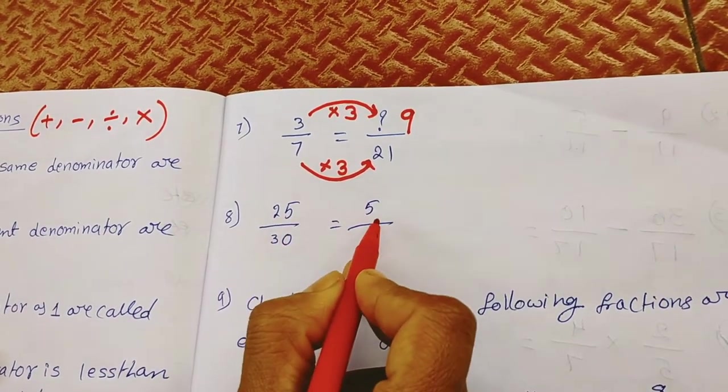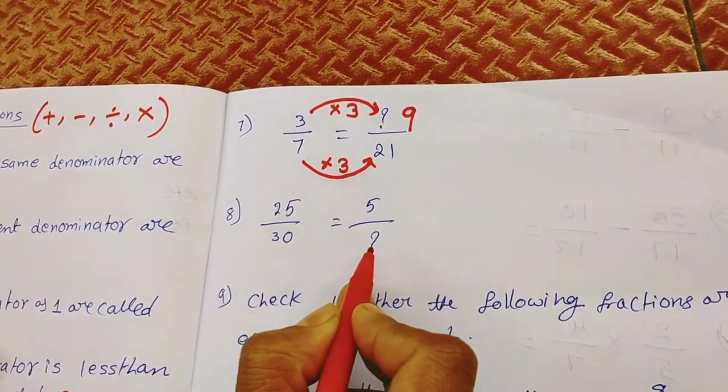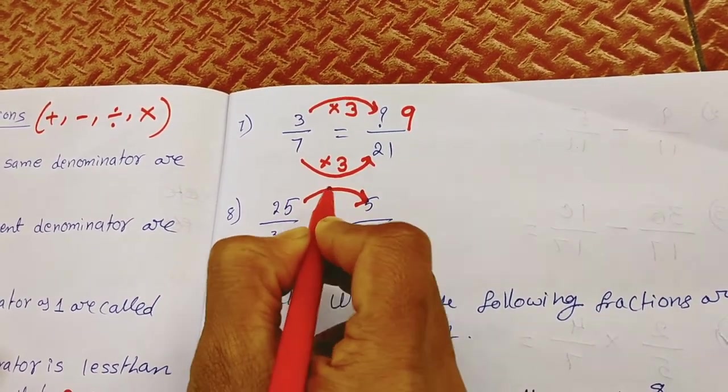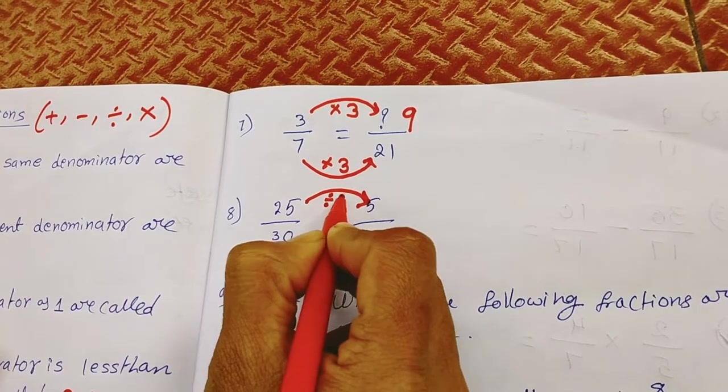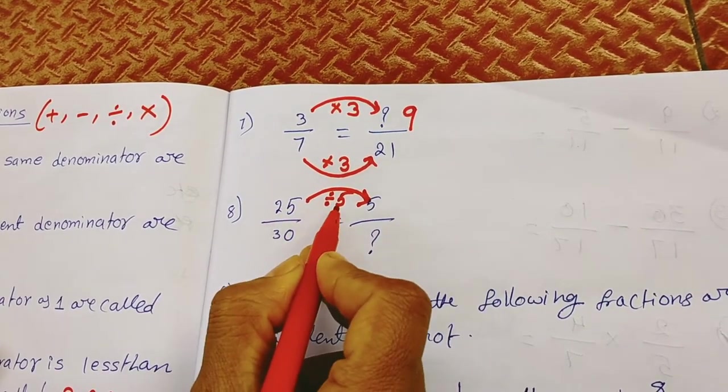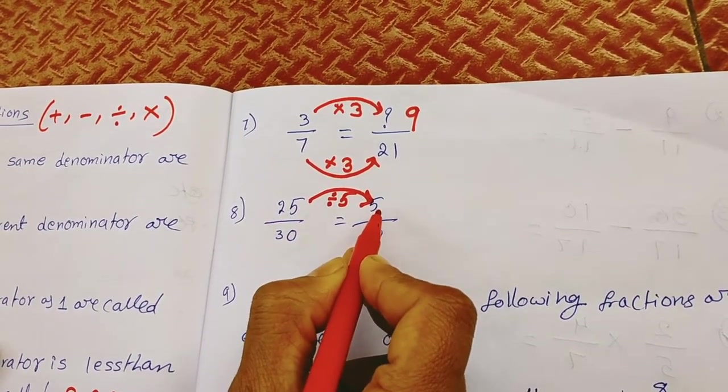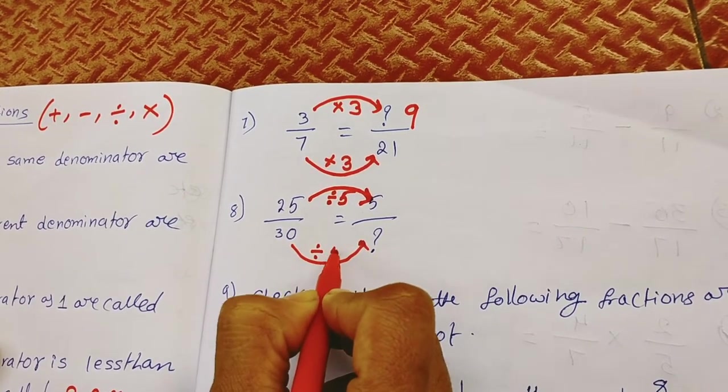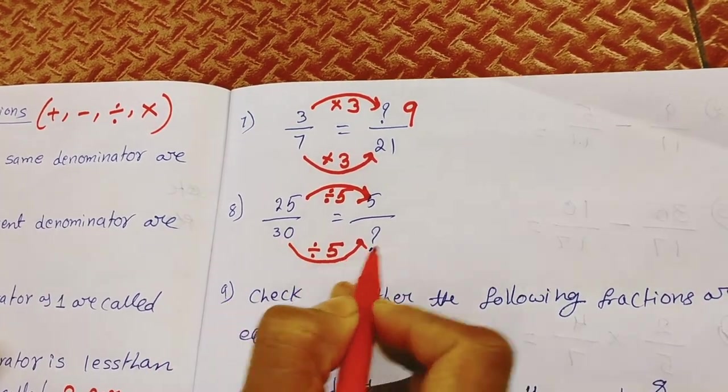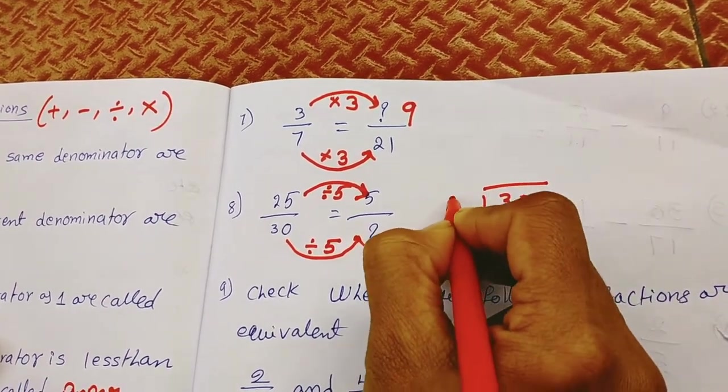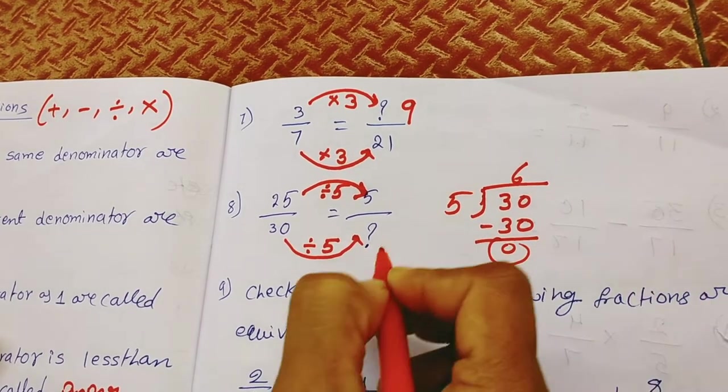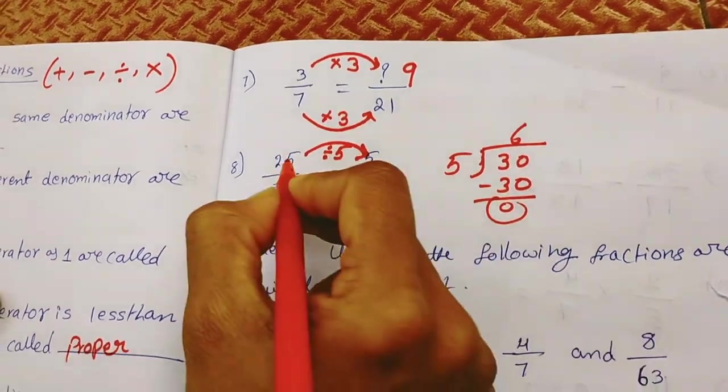In next one, here 25 is there, here 5 is there, here 30 is there. Here what will come? In this one, it is divided by 5. So 25 is divided by 5, it gives 5. In the same way, here also we take divided by 5. That means 30 is division with 5. 30 in 5 table, 5 times 6 are 30. So answer here is 6.